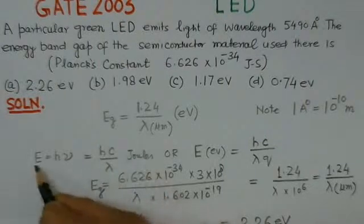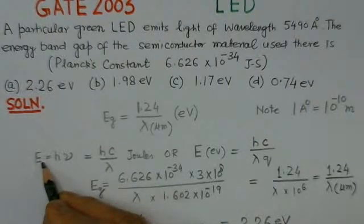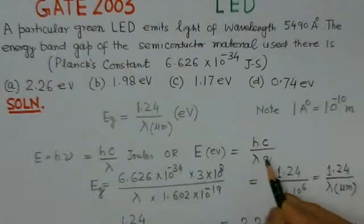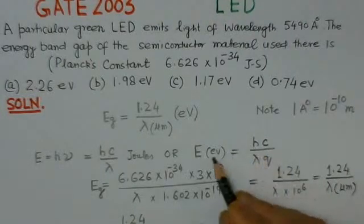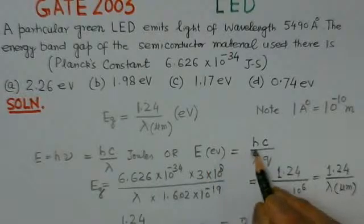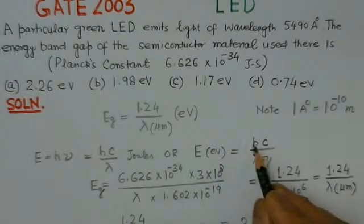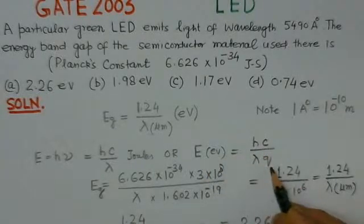Now if you want this energy in electron volts, we have to divide by the electronic charge, that is Q. So this energy gap in electron volts would be hc divided by lambda Q.